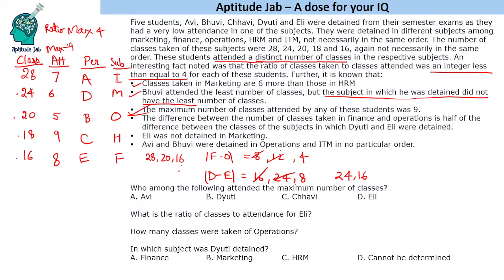Now we can answer the questions. Who attended the maximum number of classes? The maximum number of classes was attended by Chavi. What is the ratio of classes to attendance for Ali? Ali: 16 to 8, so the ratio is 2. How many classes were taken in operations? There were 20 classes in operations. In which subject was Duthi detained? Duthi was detained in marketing. That is the solution to the set.